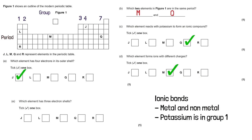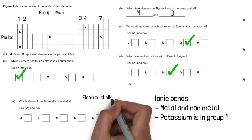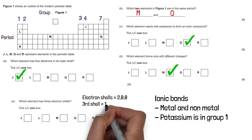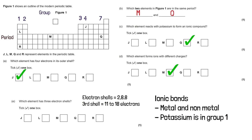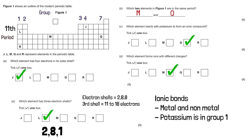Which element has 3 electron shells? To answer this we need to understand electronic structure. The first shell holds 2, the second holds 8, and the third holds 8. For an atom to have a third shell it must have 11 to 18 electrons. Element L is the 11th element, so it has 11 protons and 11 electrons, giving it the structure 2, 8, 1 — meaning it has 3 shells. The answer is L.